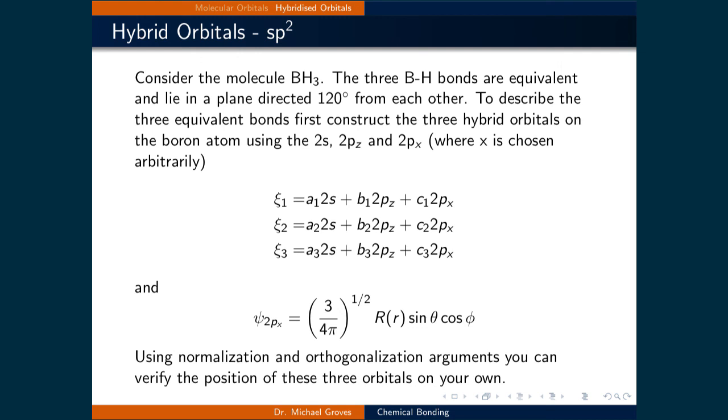We choose 2PX instead of 2PY because we'll arbitrarily let the molecule lie along the XZ plane. The three hybridized orbitals are then constructed as linear combinations of the three atomic orbitals. We will use normalization and orthogonalization to verify that the angle between these three orbitals are 120 degrees in a class activity.